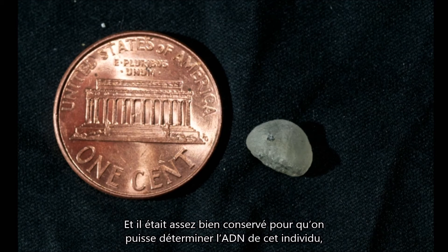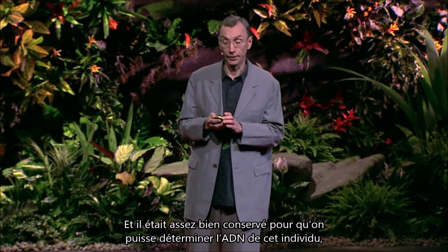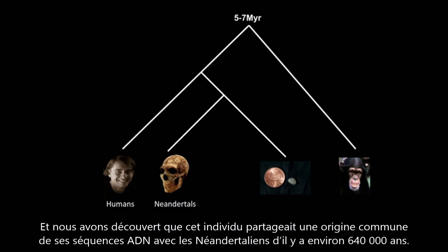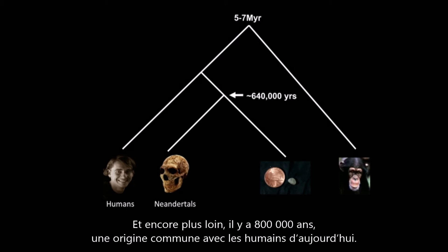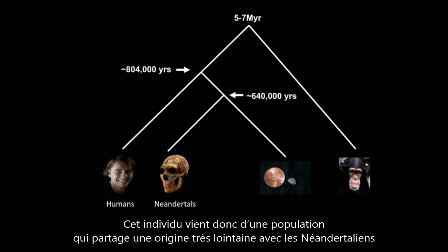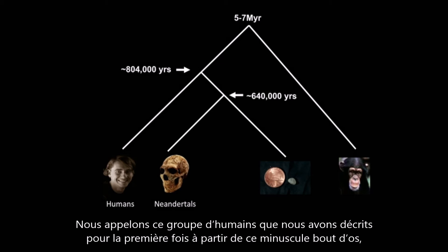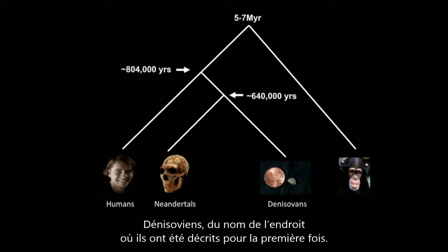Having a Neanderthal genome as a reference point and technologies to extract ancient DNA, we can apply them elsewhere. The first place we did that was in southern Siberia in the Altai Mountains at a cave site called Denisova, where archaeologists in 2008 found a tiny little piece of bone — a copy of which is shown here — from the last phalanx of a little finger of a human. It was well enough preserved to allow us to determine the DNA from this individual even to a greater extent than for the Neanderthals, and we found that this individual shared a common origin for their DNA sequences with Neanderthals around 640,000 years ago, and further back — 800,000 years ago — a common origin with present-day humans.